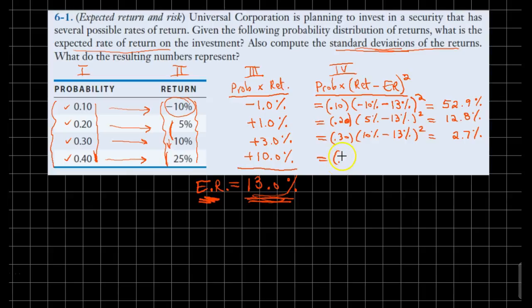And finally, with 40% chance, our return will be 25%. Average return did not change. It's squared. So 25 minus 13 is 12. 12 squared is 144. 40% times 144. We get 57.6%.